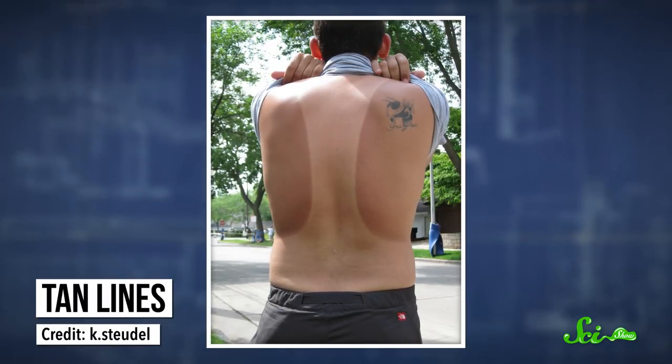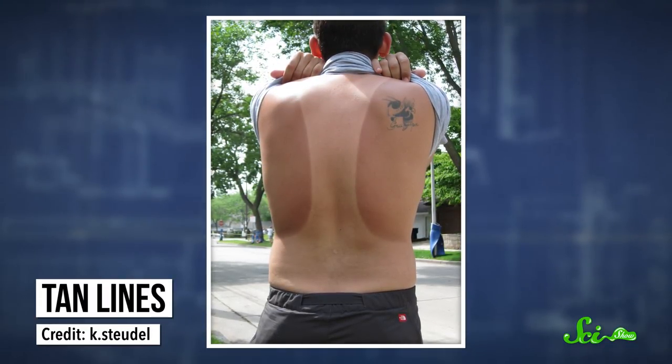Like, for example, wearing clothes. Tan lines might give you the impression that all clothes are perfect sunblockers. But even though some clothes are better than the best sunscreens, others don't do very much at all.